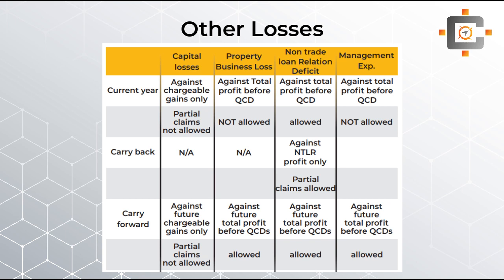Capital losses have only two options: current year and carry forward. There is no carry back available for capital losses. Capital losses can only be set off against chargeable gains — not against other types of income. Partial claims are not allowed in the current year option. If you carry capital losses forward, they can once again only be set off against chargeable gains, and partial claims are not allowed in the carry forward option either.